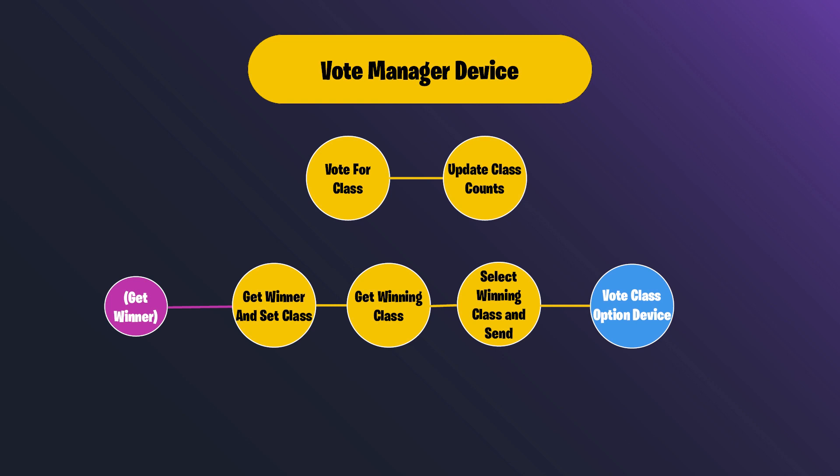The first workflow is voting for a class causing class count updates. The second workflow is getting the winner and setting all players' classes. The get winner and set class function first gets the winning class, then selects its vote class option device from the connected devices and sends a message telling that device to set all players' class to its class ID.